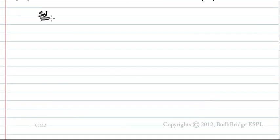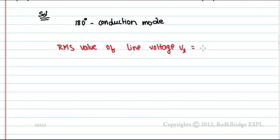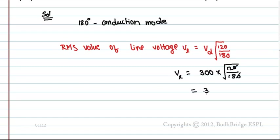Solution: 180 degrees conduction mode. RMS value of line voltage Vl equals Vd into root of 120 by 180. Vl equals Vd is 300 volts root of 120 by 180. This equals 300 into root of 2 by 3.